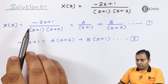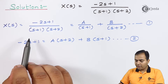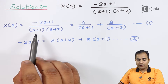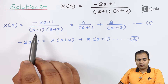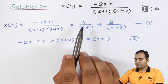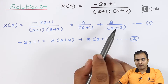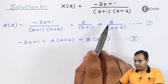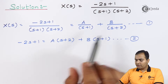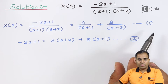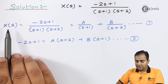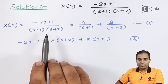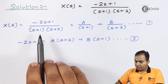So X(s) = (-2s + 1) / ((s+1)(s+2)). Since we have two factors in the denominator, I'll choose two different variables A and B. I write A over (s+1) and B over (s+2). This is equation number one: X(s) = A/(s+1) + B/(s+2). Now just do the cross multiplication.